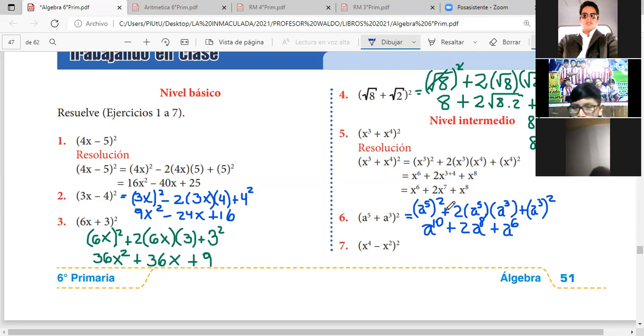Pasamos a hacer el problema 7. En el problema 7, el primero es X a la cuarta que se va a elevar al cuadrado. 2 que va a multiplicar al primero, que es X a la cuarta, y al segundo, que es X al cuadrado. Y finalmente, el segundo que es X al cuadrado se va a elevar al cuadrado. Como es un binomio de diferencia, los signos van alternados.